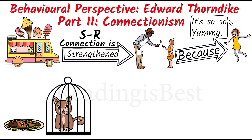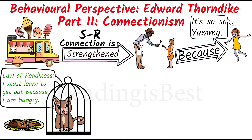Based on the law of readiness, the cat is motivated to learn because it has a reason to learn — it knows it will get food if it escapes. Thus it will try every possible way. After a series of trials and errors, the cat would discover the device which allows it to escape and receive a reward, which is food.